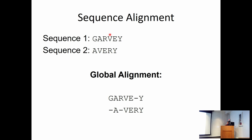Suppose I have these two sequences and want to do a global alignment. The alignment is trying to match sections from the top sequence to the bottom sequence. We say this alanine is probably related to the alanine in the first sequence - Avery is related to the alanine in Garvey. There'll be a gap inserted because R and V are not very similar. R is arginine, a basic amino acid. V is valine, a very hydrophobic amino acid - about as different as you can make two amino acids.